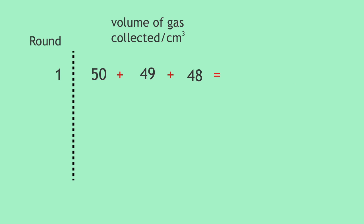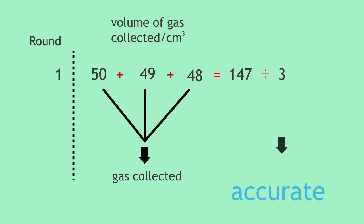The answer is you add the measurements and divide the total by the number of times you measured the volume of gas collected, which was three times. You have now made this measurement more accurate.